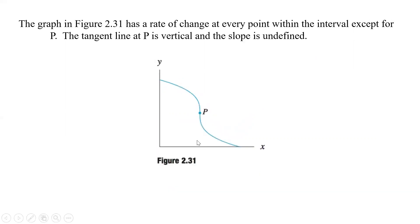In Figure 2.31, there is a rate of change at every point on the interval except for point p, because the tangent line at p is actually a vertical line. The slope of a vertical line is undefined, so we can't find a slope of that tangent line at p.